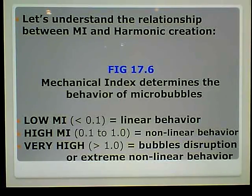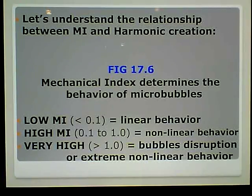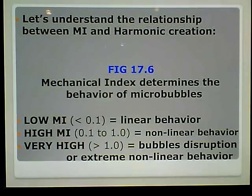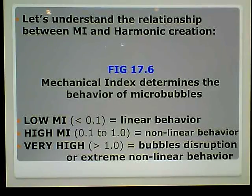If we have a very high MI — greater than 1.0 — we have bubble disruption. It's not just a little expand and contract; the bubbles start going crazy. That is extreme non-linear behavior, and therefore we're going to have very strong harmonic creation.